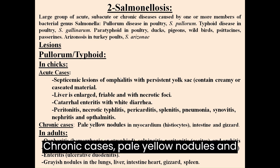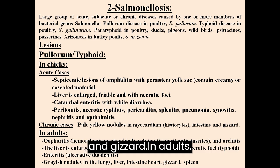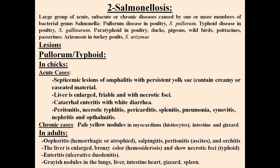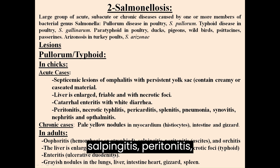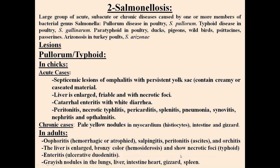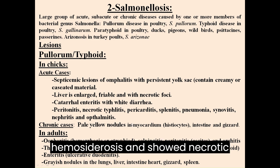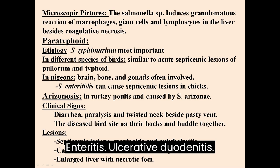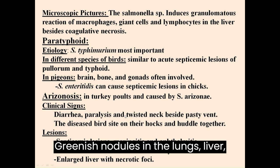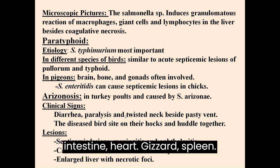Chronic cases show pale yellow nodules in the myocardium, histiocytes, intestine and gizzard. In adults: oophoritis, hemorrhagic atrophy, salpingitis, peritonitis, ascites and orchitis. The liver is enlarged with bronzy color, hemosiderosis and necrotic foci; typhoid enteritis and ulcerative duodenitis. Grayish nodules in the lungs, liver, intestine, heart, gizzard and spleen.